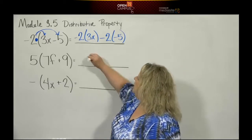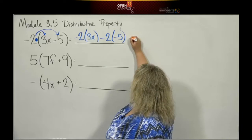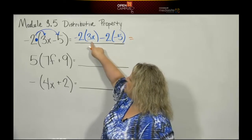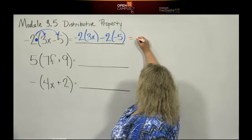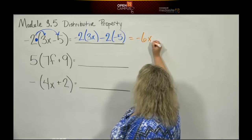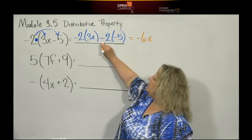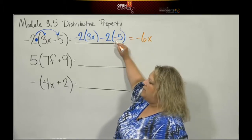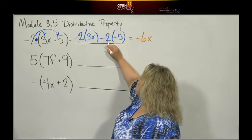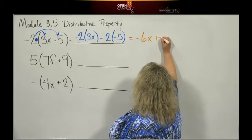I have negative 2 times 3x. A negative times a positive is a negative, so that gives me negative 6x. Then here I have negative times a negative makes a positive. So 2 times 5 is 10, so that's positive 10.